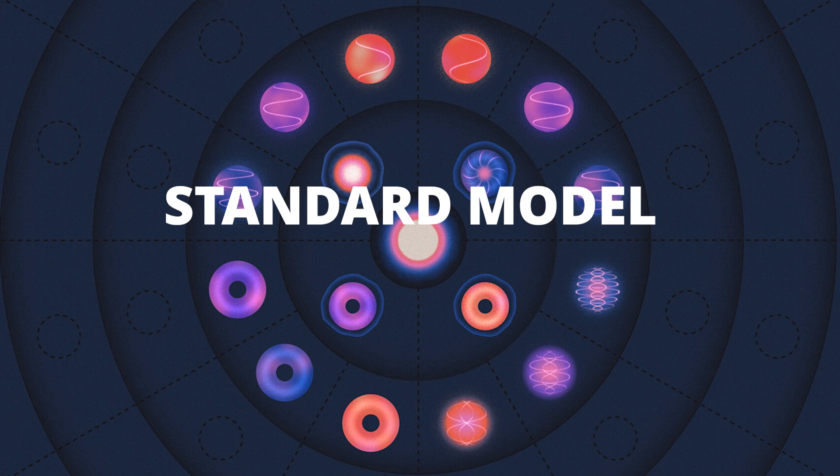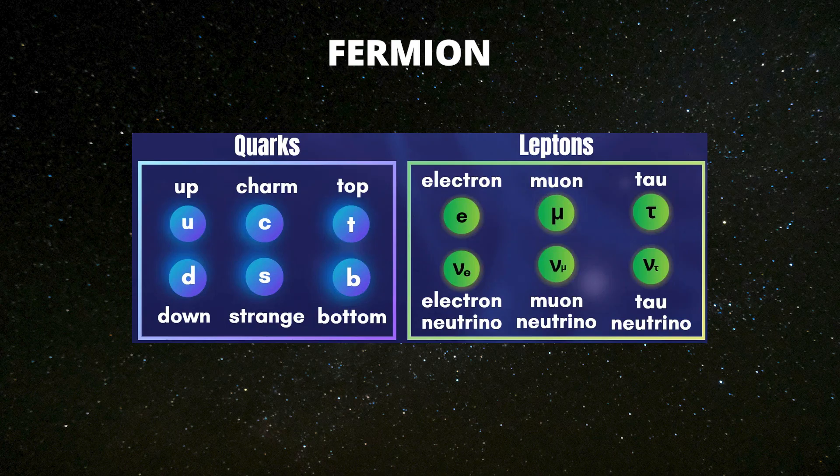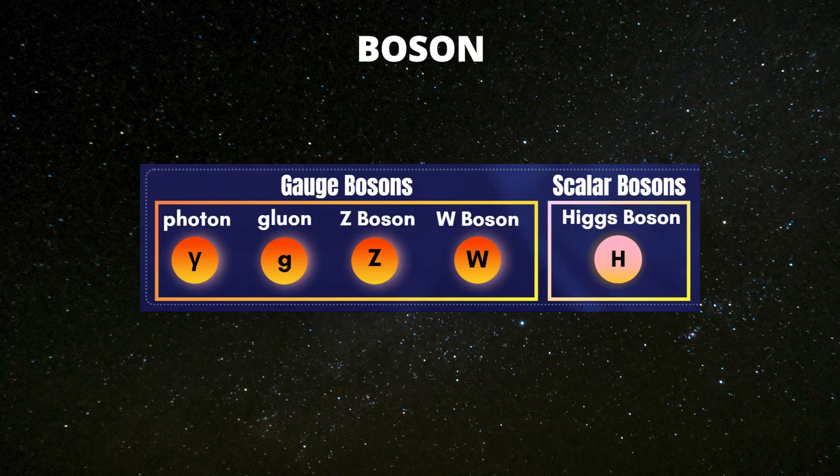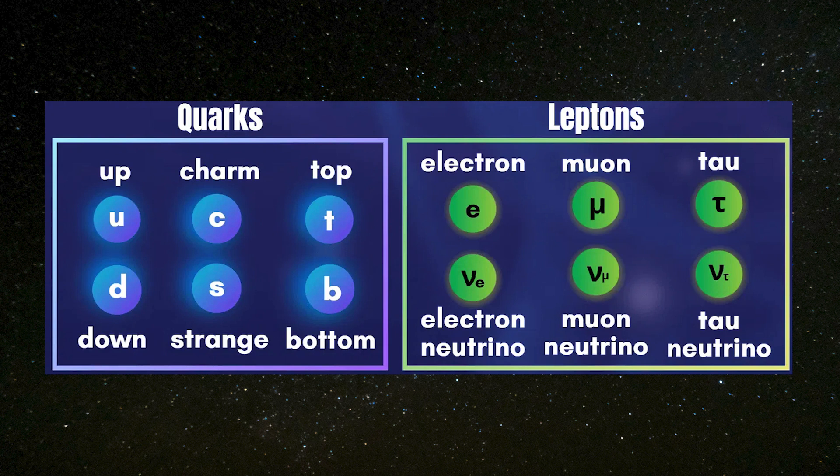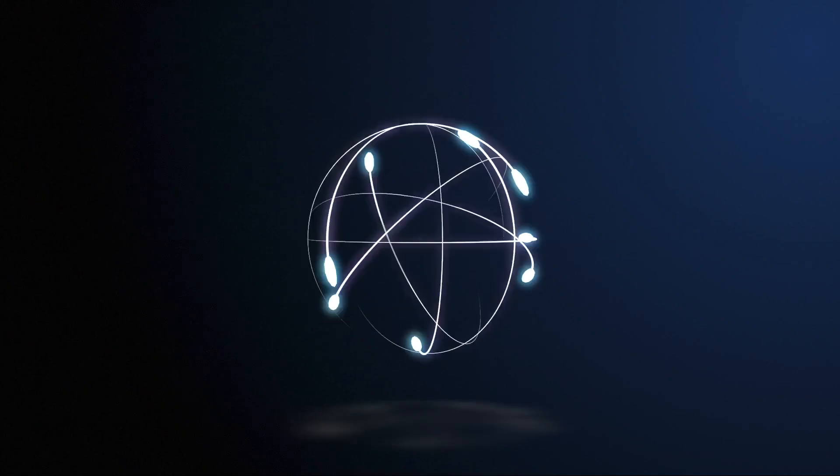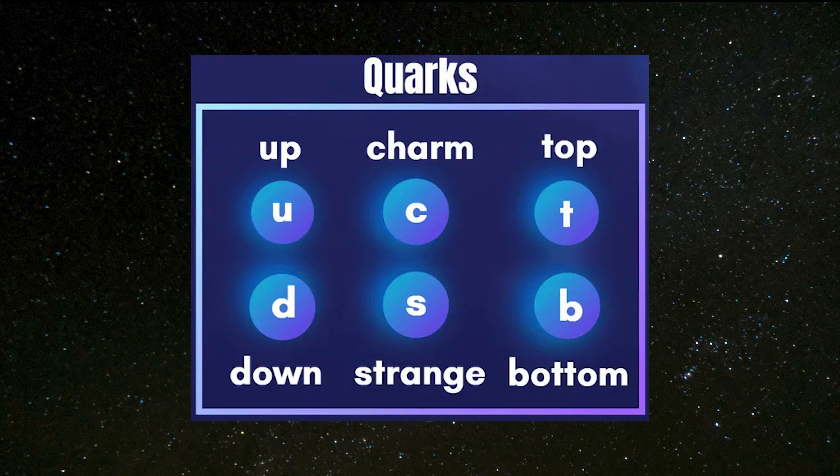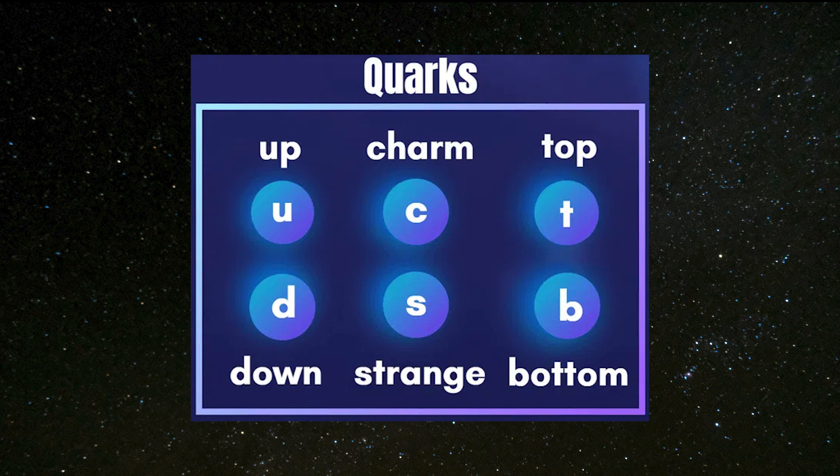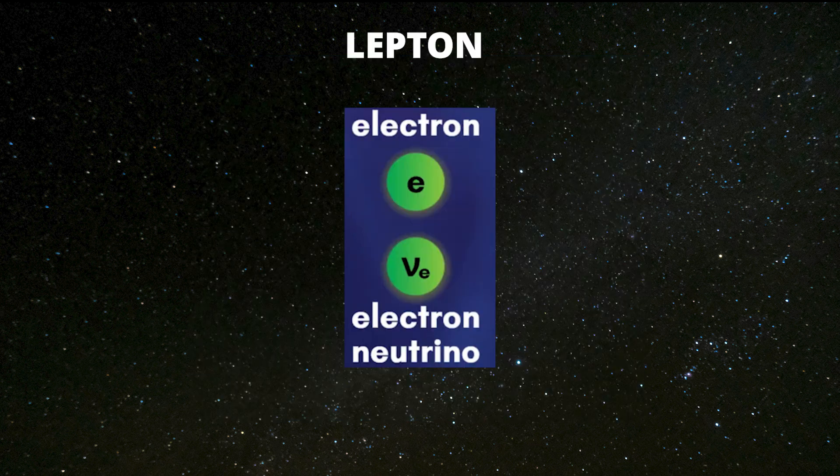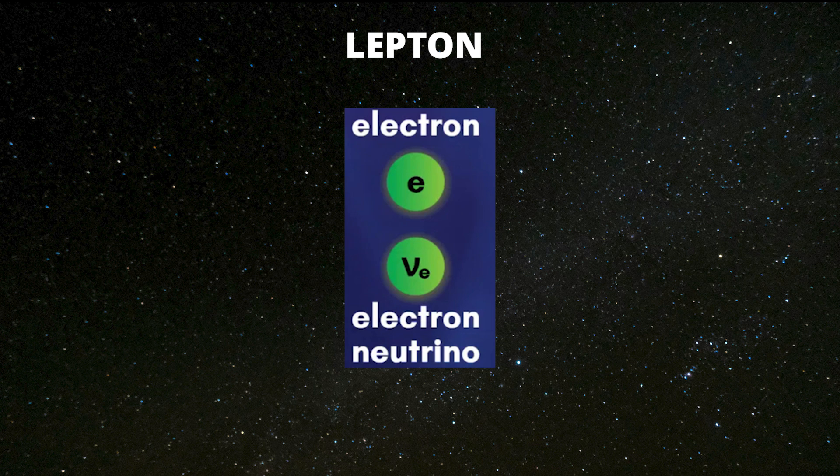To understand this, we first need to understand how a particle is made. The standard model divides all the fundamental particles into two main groups: fermions and bosons. Fermions are the particles that make up matter, quarks and leptons. Quarks are particles that combine to form protons and neutrons. There are six types of quarks: up, down, charm, strange, top and bottom. Another category is the leptons. These include electrons found in atoms, along with neutrinos, which are tiny, nearly massless particles that rarely interact with other matter.